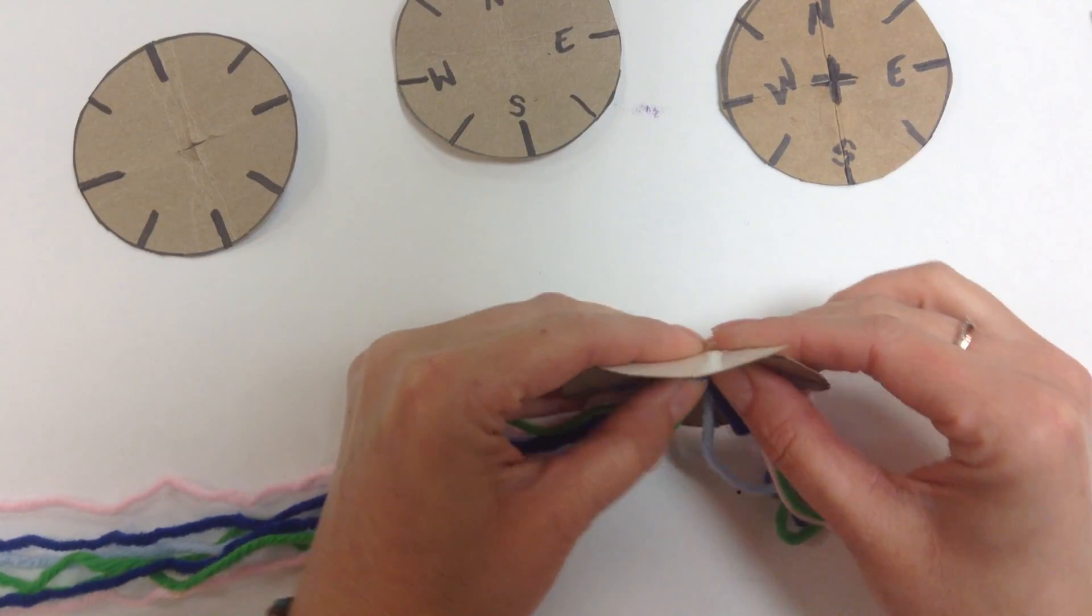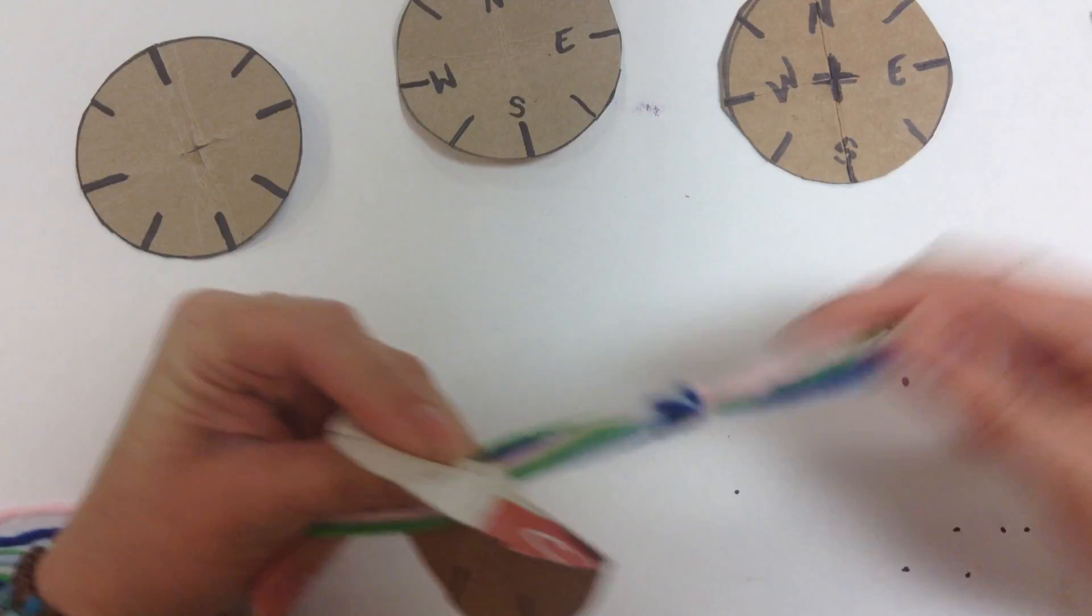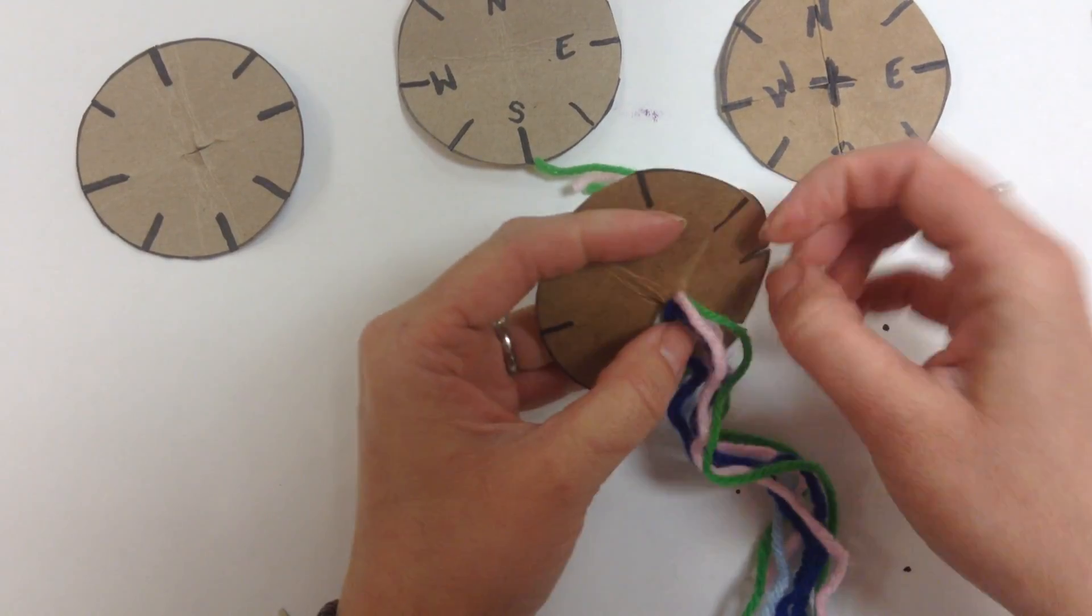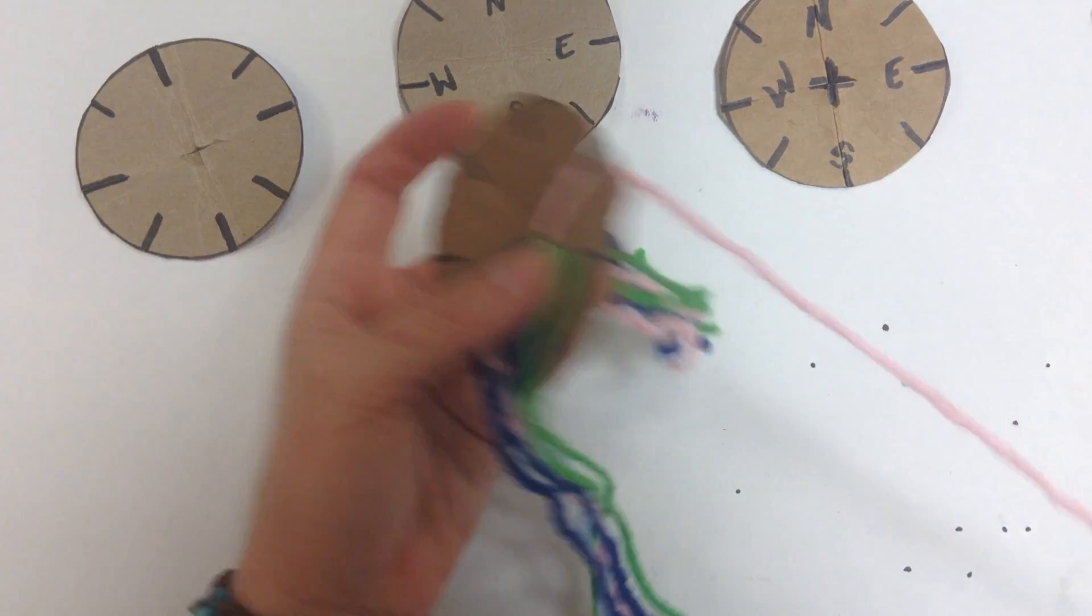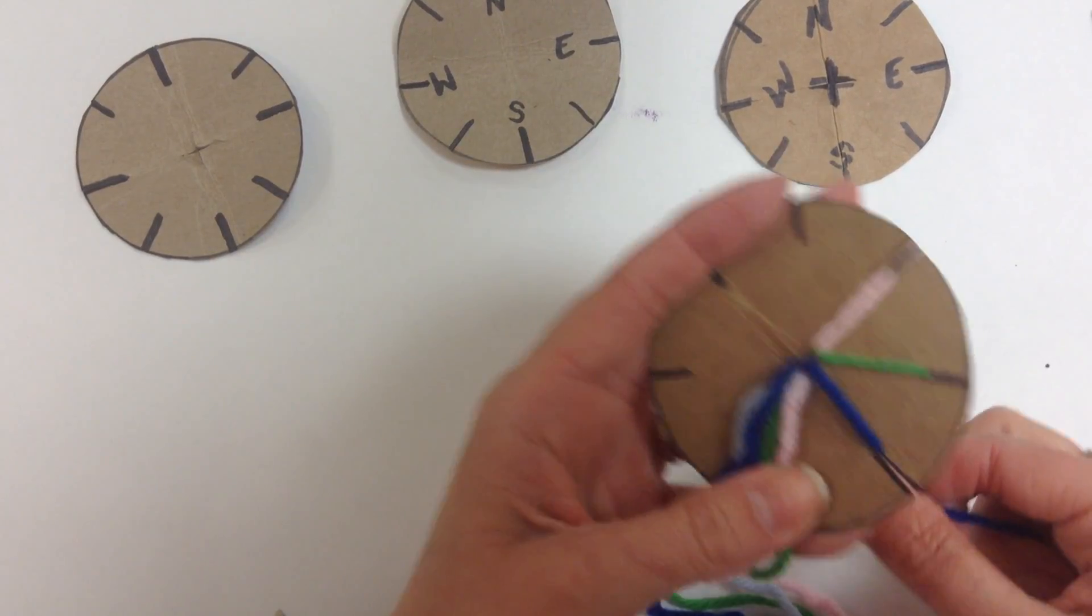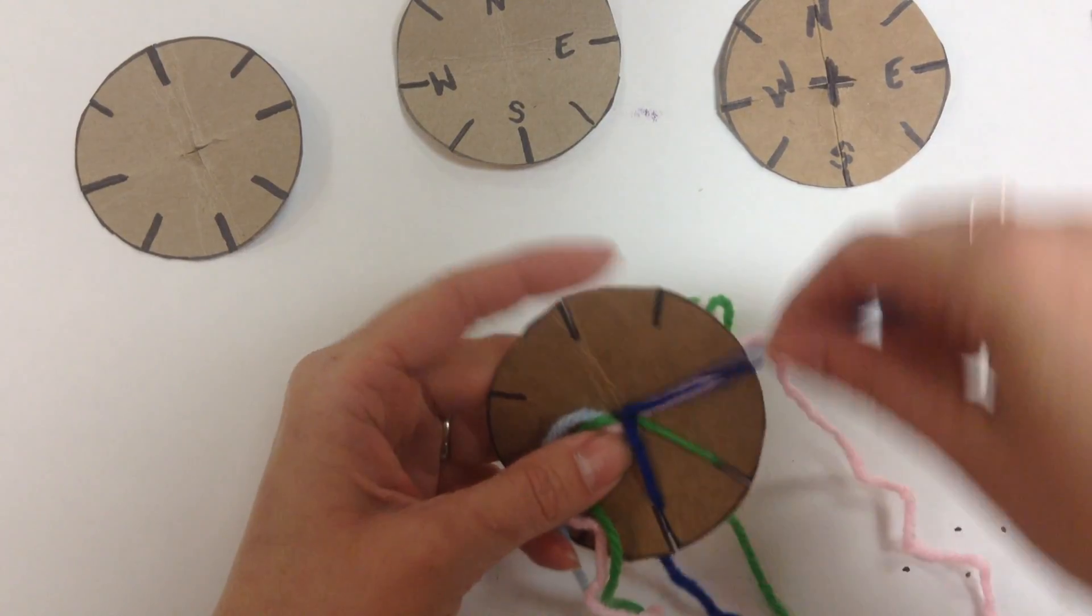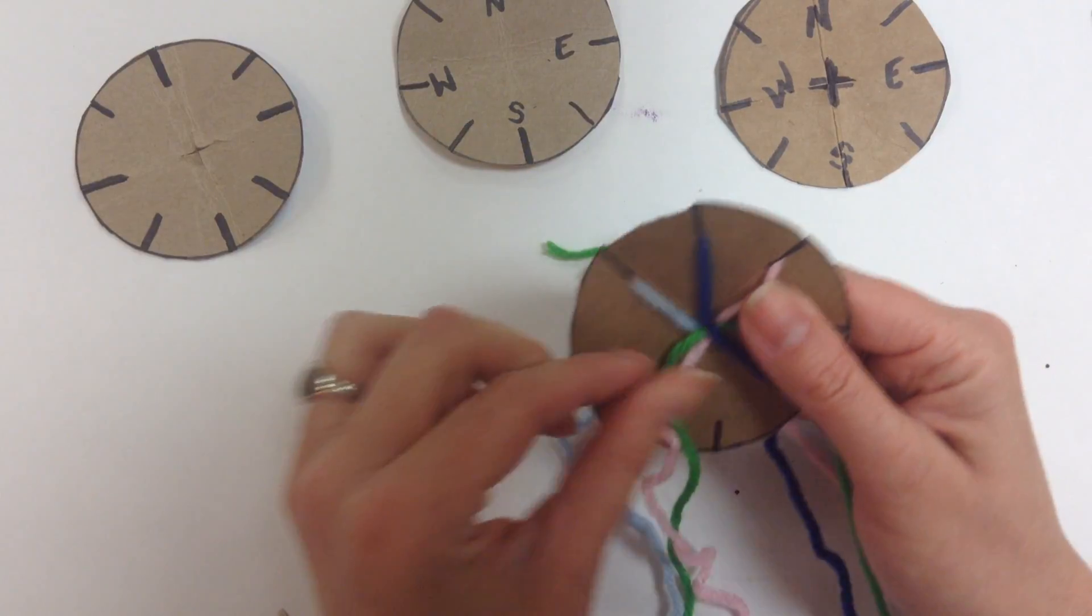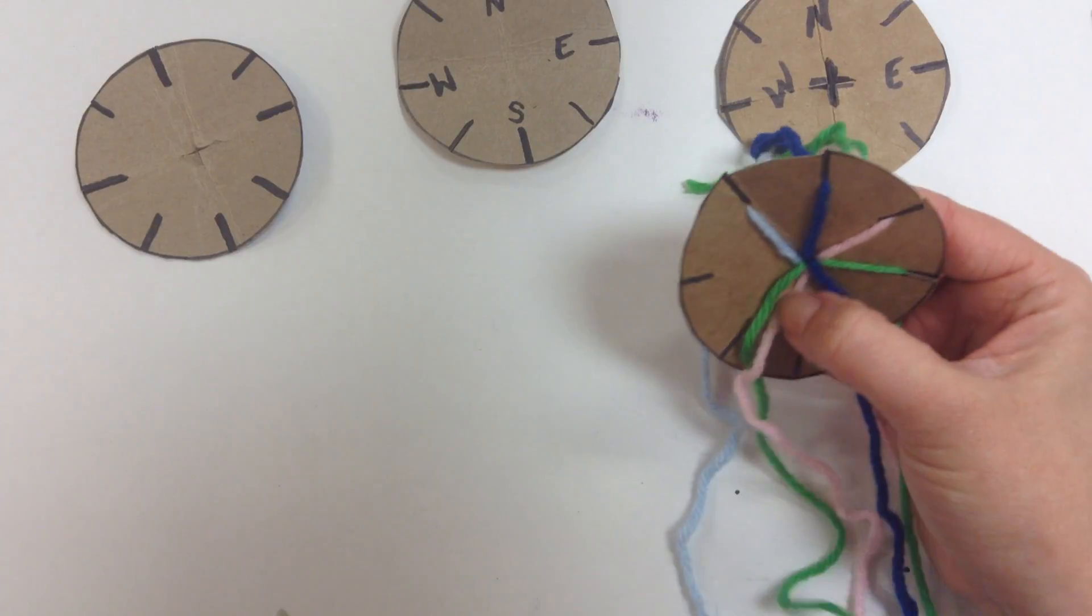I'm just going to hold on to those tails down there, and then I'm going to take the strings and put one in each one of those slits on the edge. There's one, two, three, four, five, six, and seven.